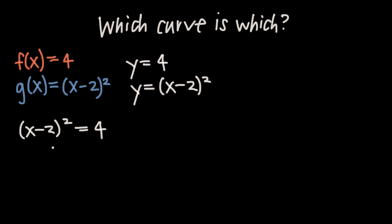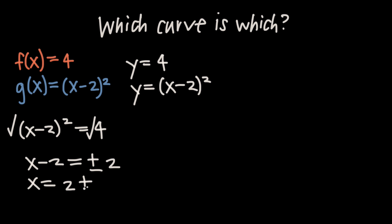From there we solve for x. Taking the square root of both sides cancels the squared exponent, leaving x minus 2 on the left, and the square root of 4 gives plus or minus 2 on the right. Adding 2 to both sides gives x equals 2 plus or minus 2, so x equals 0 or x equals 4. Those two points are the intersection points of f and g.